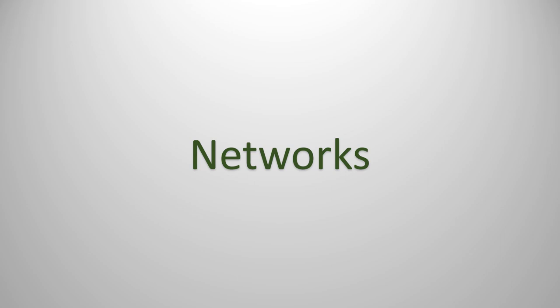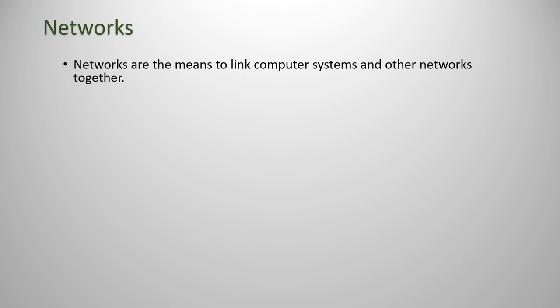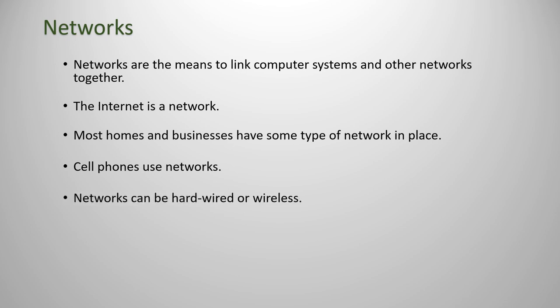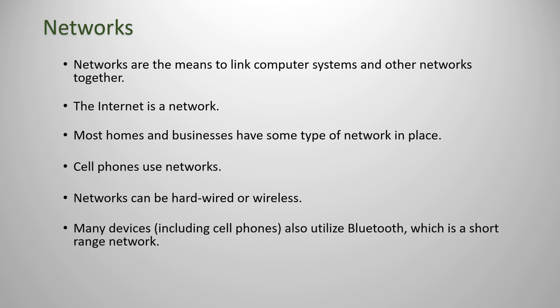For the second half of this lecture, we'll look at the basics of networks. Networks are the means to link computer systems or other networks together. The internet is considered to be a network. Most homes and businesses have some type of network in place. Cell phones use networks. Networks can be hardwired or wireless. Many devices, including cell phones, also use Bluetooth, which is a short-range network. Networks are comprised of five basic components.